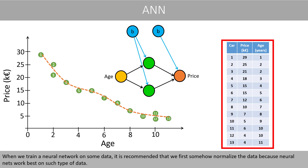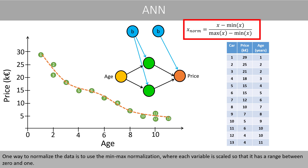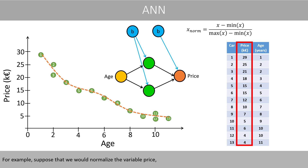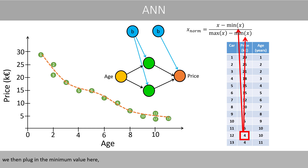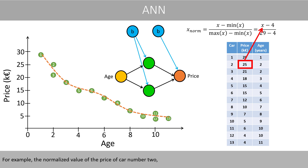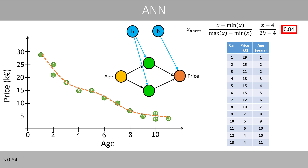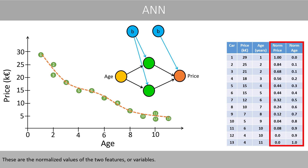When we train a neural network on some data, it is recommended that we first normalize the data because neural networks work best on such type of data. One way to normalize the data is to use the min-max normalization where each variable is scaled so that it has a range between 0 and 1. For example, suppose that we would normalize the variable price. We plug in the minimum value and the maximum value. The normalized value of the price of car number 2 is 0.84.